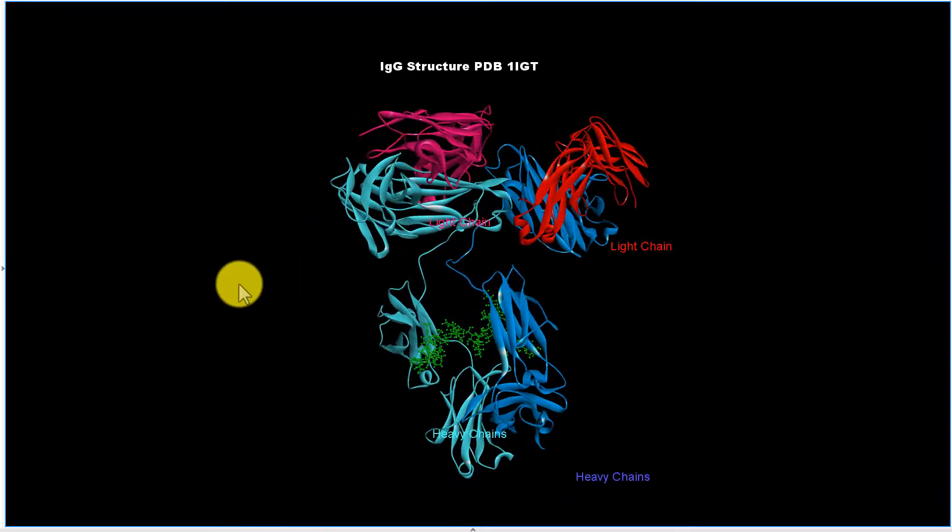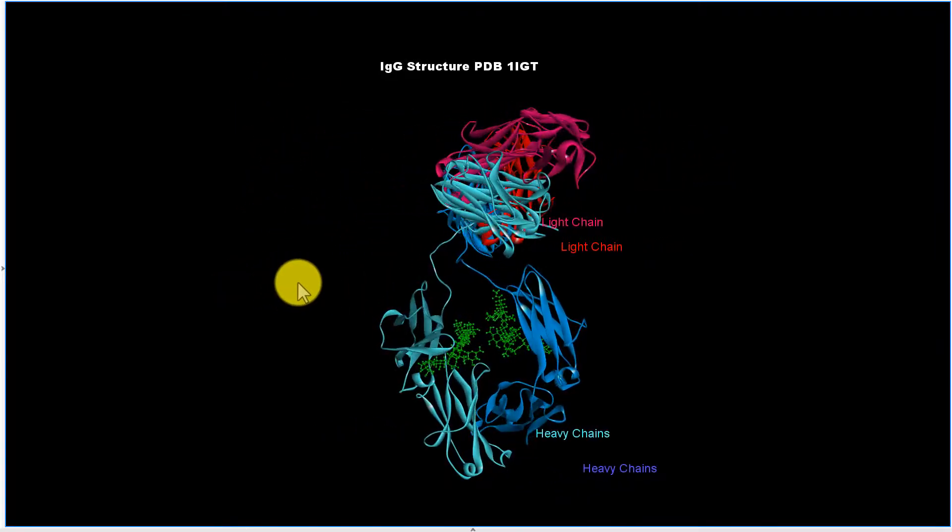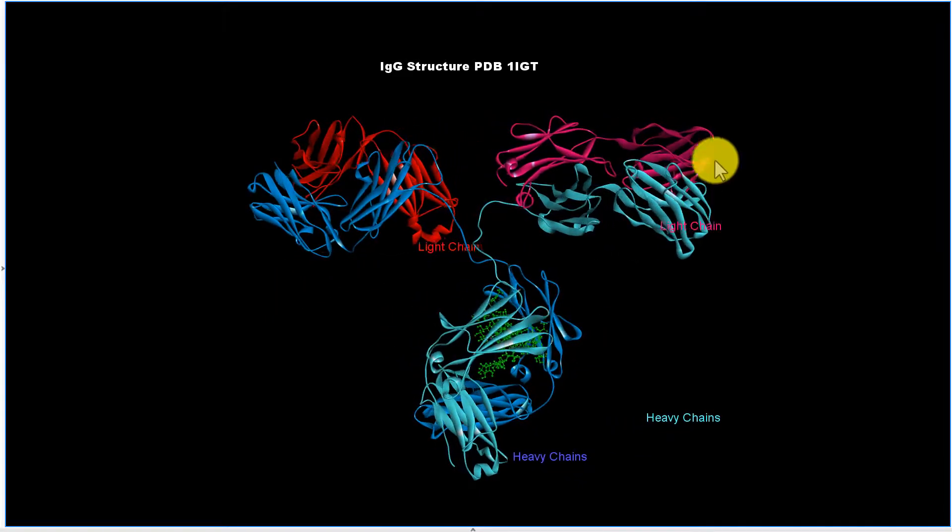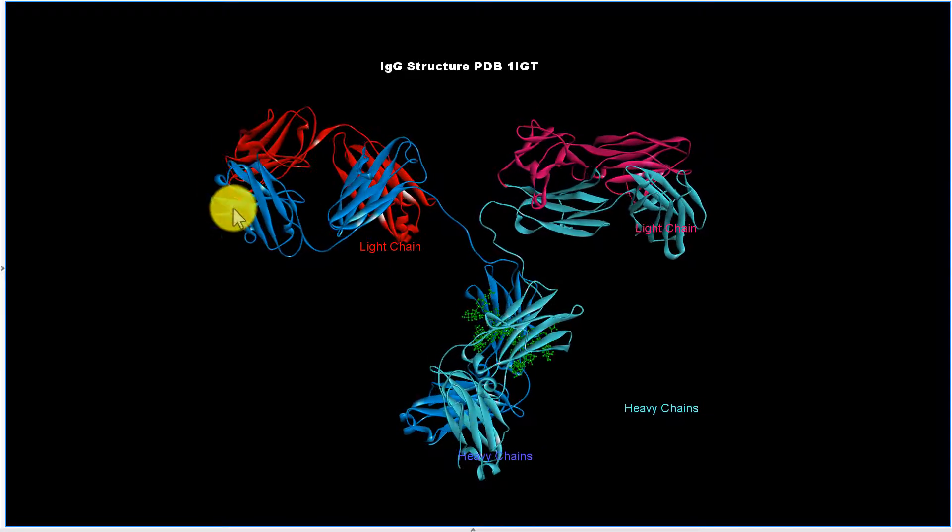And then the constant regions are towards the C terminus. These are the N terminus here and this is the antigen binding site, and the other antigen binding site's over here.